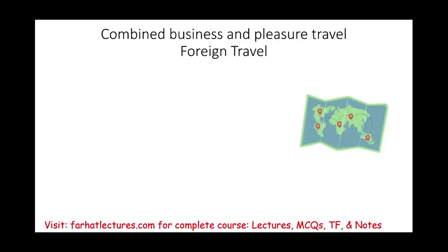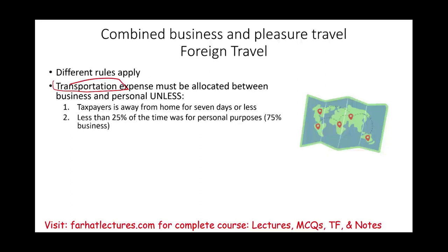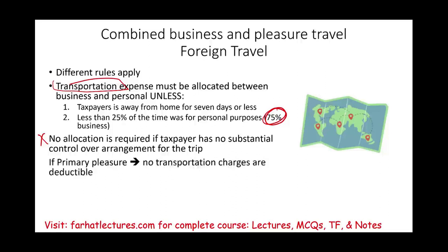For foreign travel, slightly different rules apply when combining business and pleasure. Transportation expense must be allocated between personal and business unless the taxpayer is away for seven days or less and less than 25% of the time was personal, or the taxpayer has no substantial control over the arrangement of the trip — for example, when a company determines your travel dates. If these conditions aren't met and the trip is primarily for pleasure, you cannot deduct transportation at all.